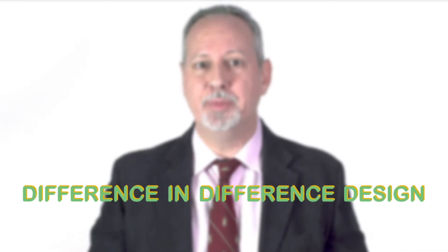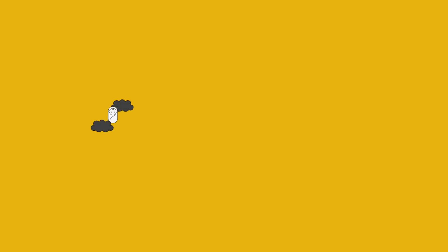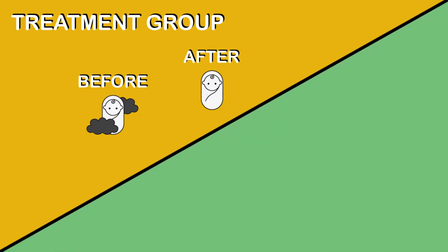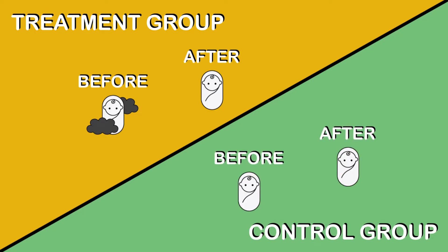So this is called a difference in difference design, because it compares the difference in infant health of the treatment group before and after EZPass to the difference in infant health of the control group before and after EZPass. If the control group has similar dynamics to the treatment group, this difference in difference method will produce a causal estimate of the impact of air pollution on infant health.